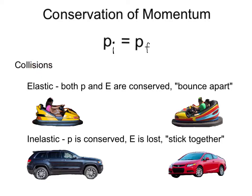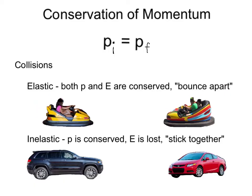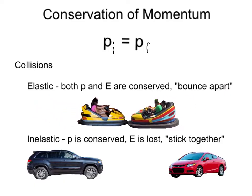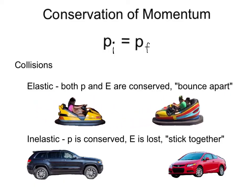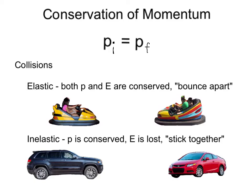There are two types of collisions: elastic and inelastic. In an elastic collision, both momentum and energy are conserved. Typically, objects in an elastic collision bounce apart. If we look at these two bumper cars coming towards each other, they hit and bounce apart — this would be an elastic collision.